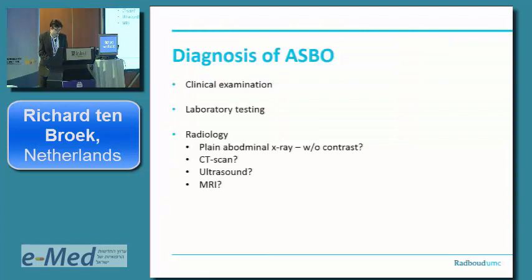And then we come to the diagnosis of ASBO. First, naturally, there's your clinical examination — the patient with absence of stool, abdominal pain, vomiting. Laboratory testing should focus on kidney injury, dehydration, and electrolyte disturbances. And then there's radiology.